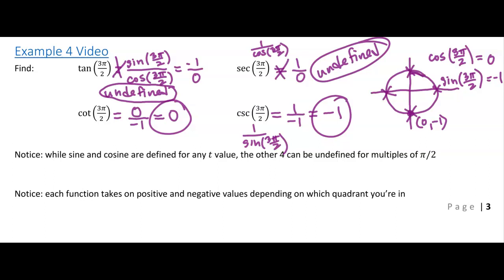So those will become undefined whenever the denominator is 0. So for now, while we're working strictly with these pi over 2s, you're going to see a lot of undefined, a lot of 0s, a lot of negative 1s crop up. Once we get into a few more angles that we're able to say the exact values of sine and cosine for, we'll be able to do a little bit more with that.